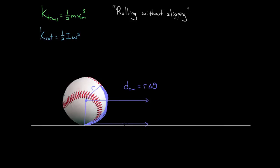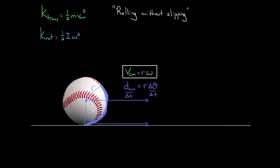The distance the center of mass moves is equal to the arc length — equal to the length painted on the ground, so to speak. If we divide both sides by the time that took, we get the distance the center of mass moved over time, which is just the speed of the center of mass. That equals r times delta theta over delta t, which is just the angular speed. So the speed of the center of mass for something rolling without slipping equals r times the angular speed: v = rω. You want to commit this to memory — when a problem says something is rolling without slipping, that's code for v = rω, where v is the center of mass speed and ω is the angular speed about that center of mass.